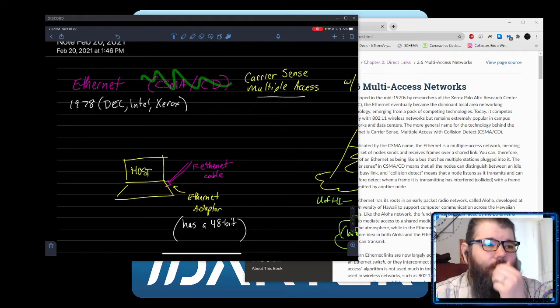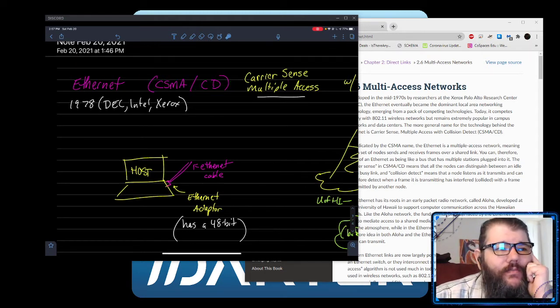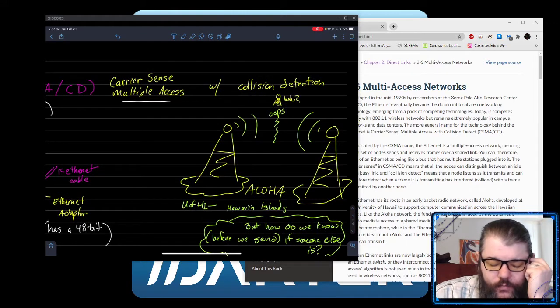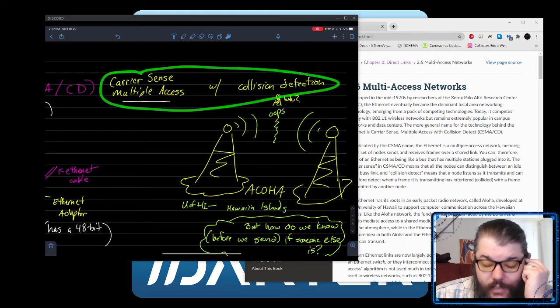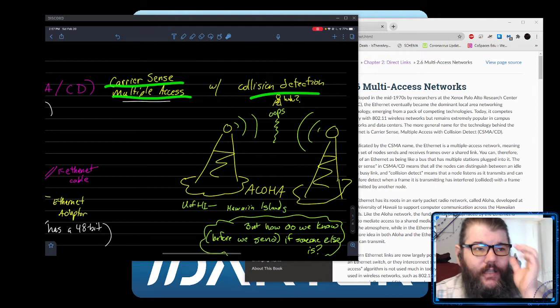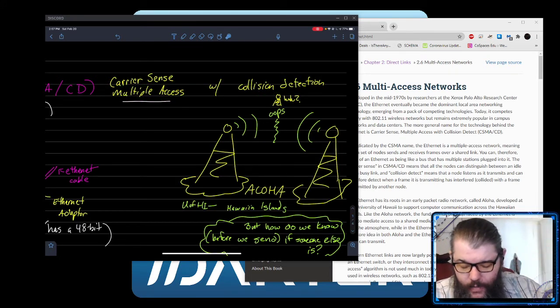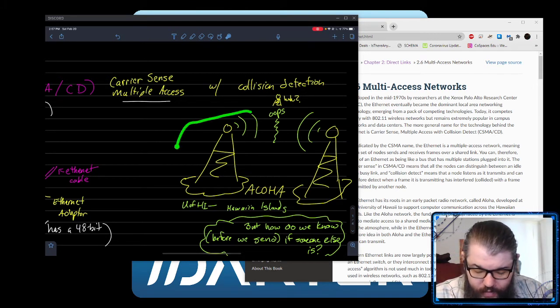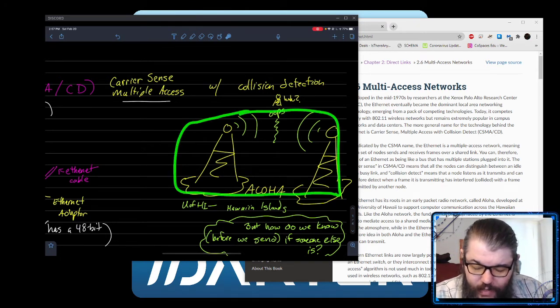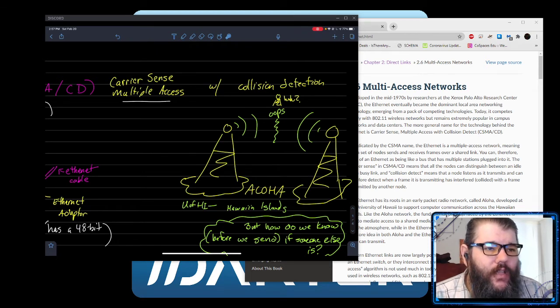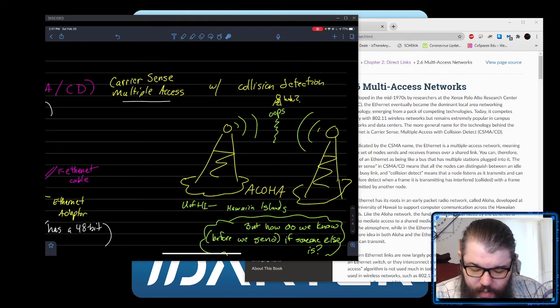It's known as a CSMA/CD protocol. CSMA/CD stands for Carrier Sense Multiple Access with Collision Detection. We're going to go through what each of those means and walk through them. CSMA/CD is largely built around the Aloha network, which was communication between radio towers in Hawaiian islands that they used to coordinate access and communication.